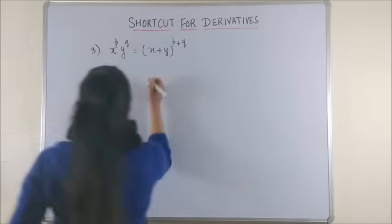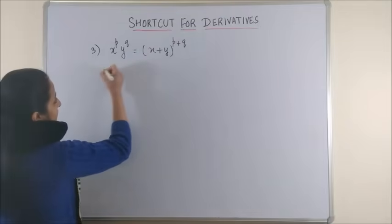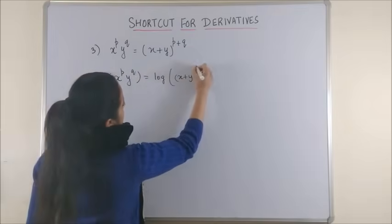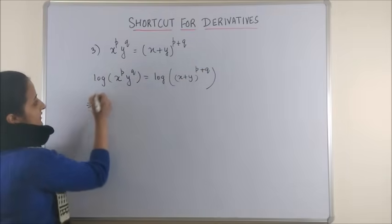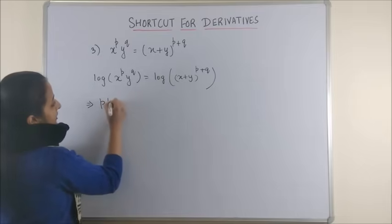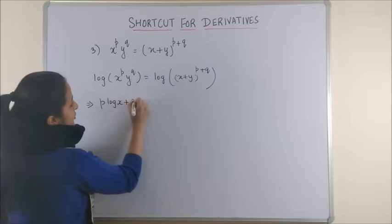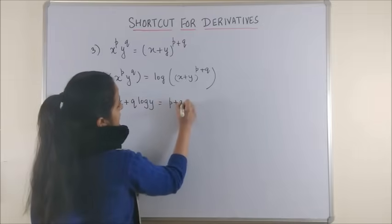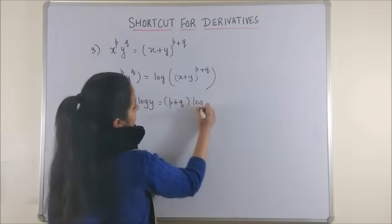Watch this. So, as per the conventional form, I can take log of both sides. As per the properties of logs, this becomes p log x plus q log y is equal to p plus q of log x plus y.